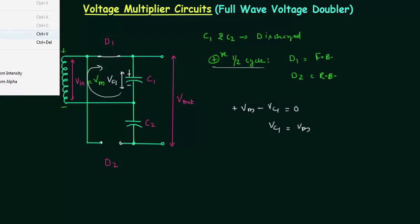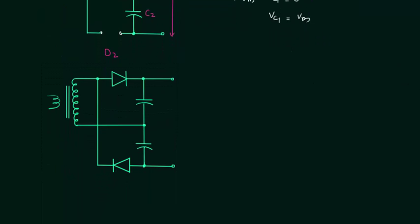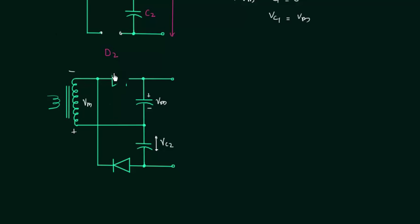I will now draw this circuit again and analyze it for the negative half cycle. For the negative half cycle, the voltage across capacitor C1 is equal to Vm and we need to calculate Vc2. In the negative half cycle this will be the polarity of the input voltage Vm. When this happens, diode D1 is reverse biased and diode D2 is forward biased. Replacing with equivalent models, we have an open circuit in place of D1 and a short circuit in place of D2.